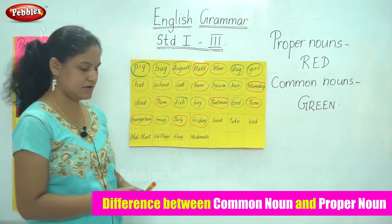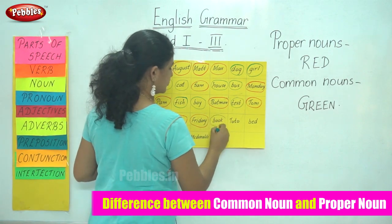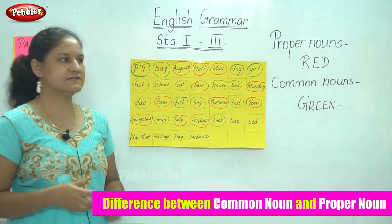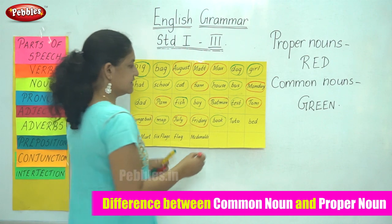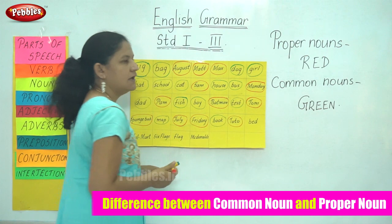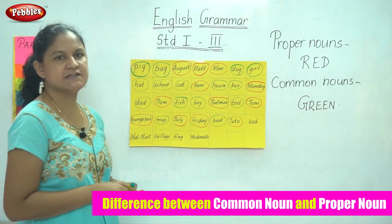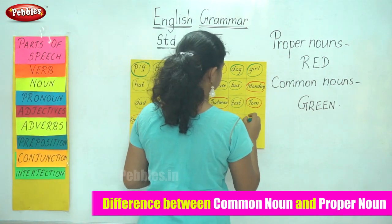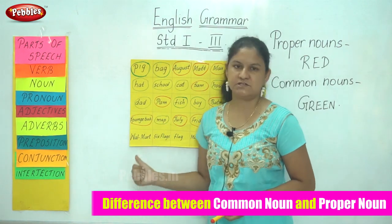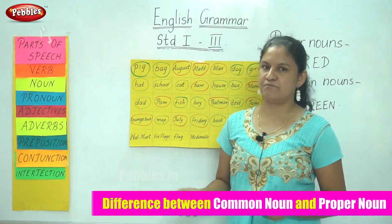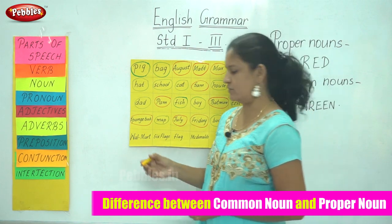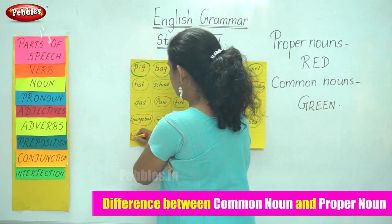Book is a common noun. Toto is the name of a pet, it starts with a capital letter, and is a proper noun. Bed is the name of a thing and is a common noun. The next word is Walmart. Walmart is the name of a supermarket, it starts with a capital letter, and is a proper noun. So I circle the word Walmart in red.